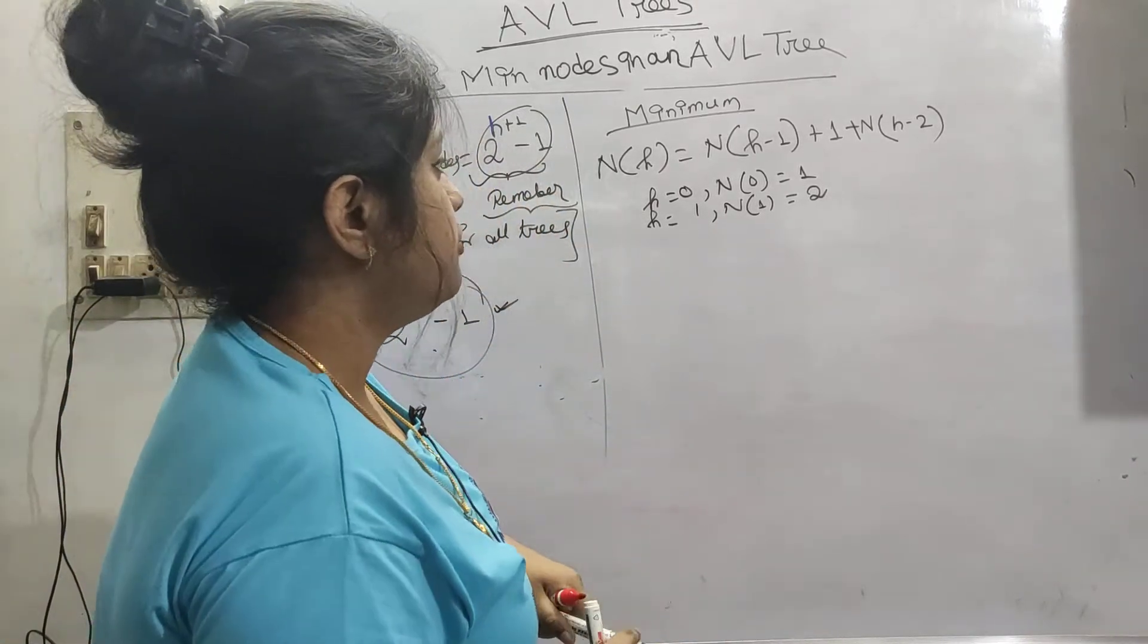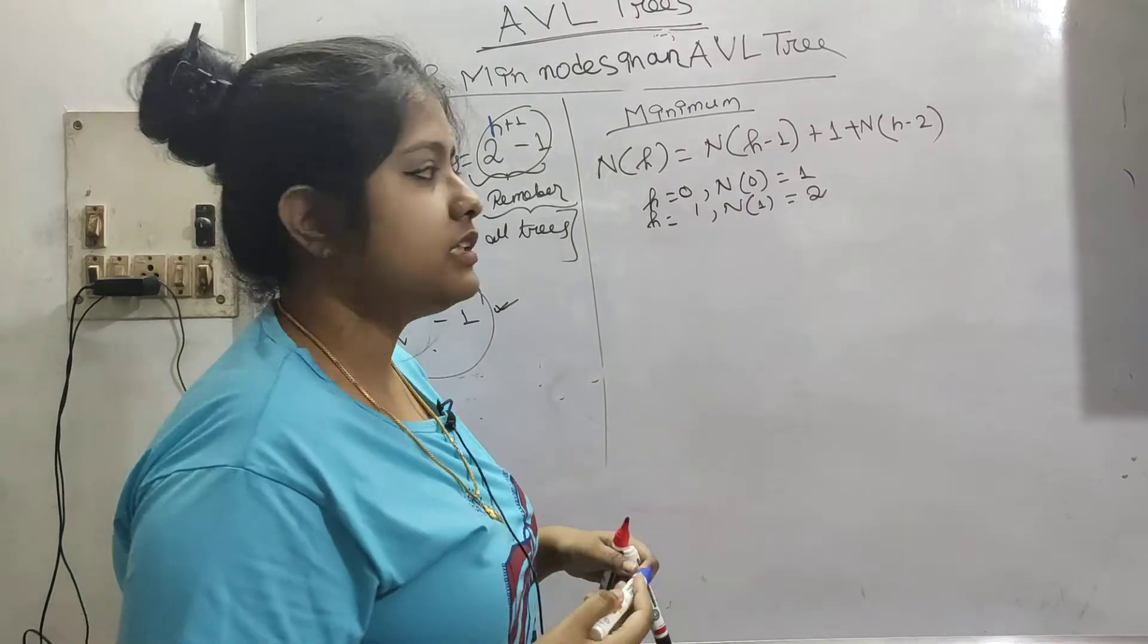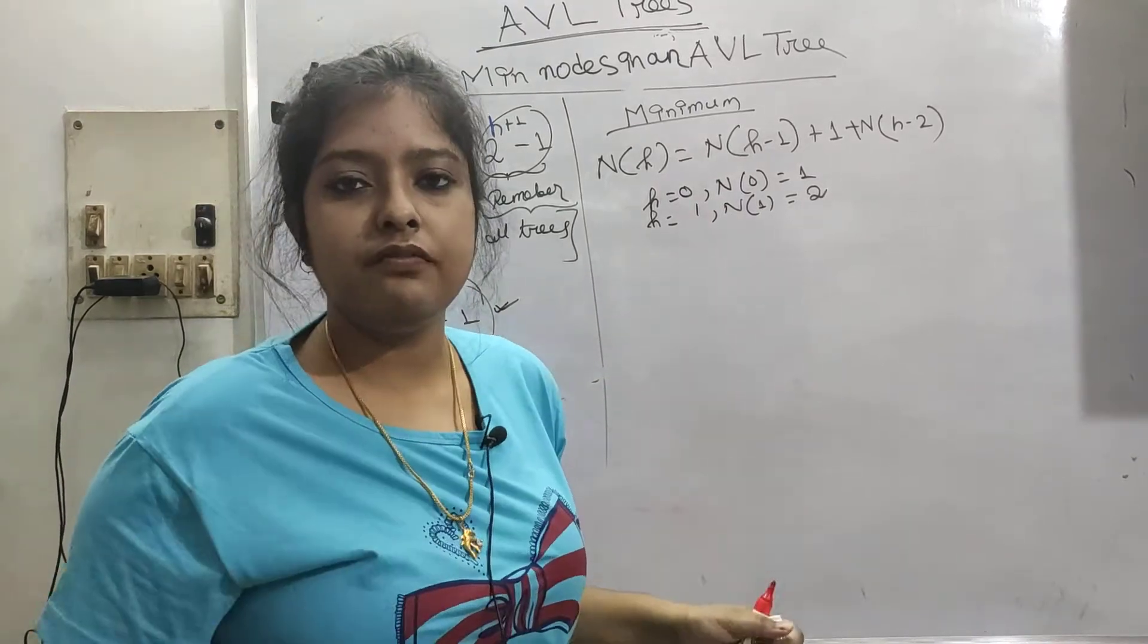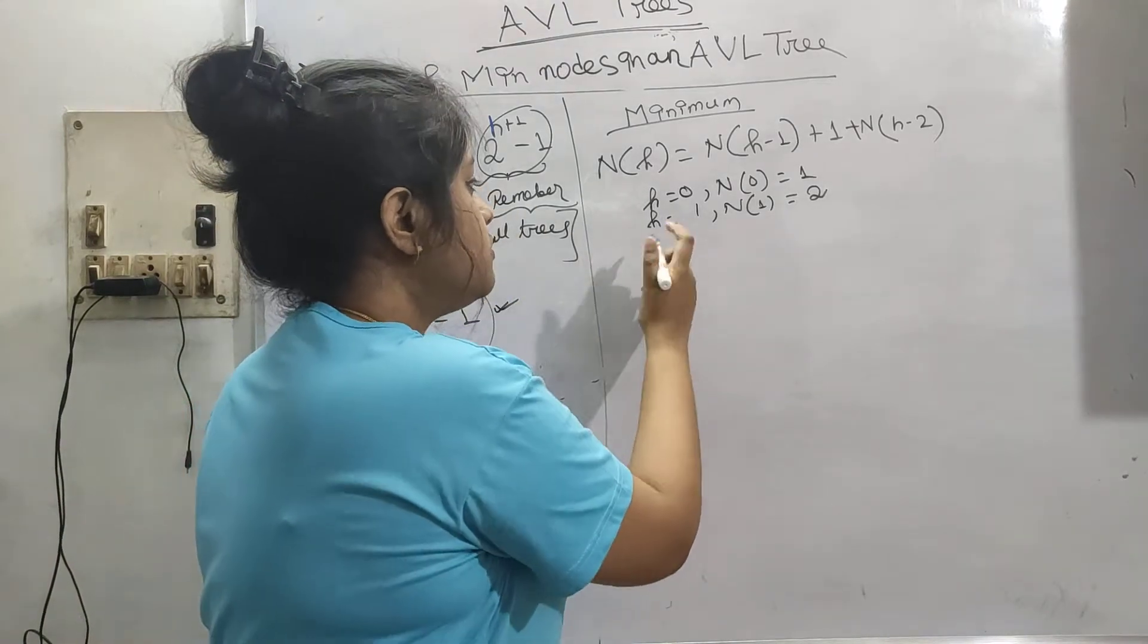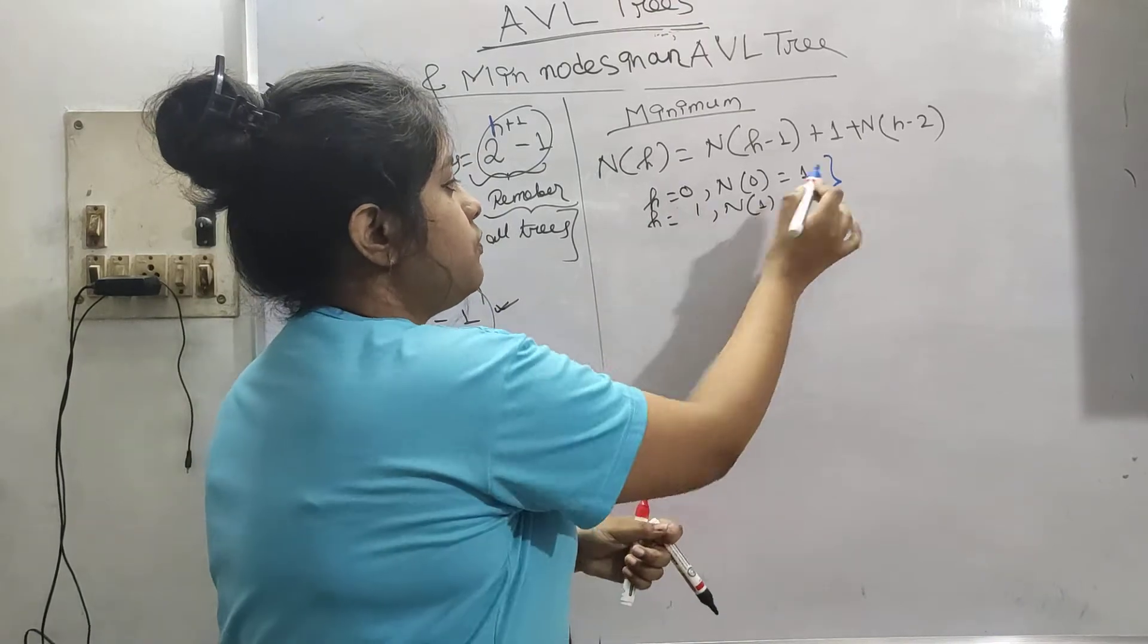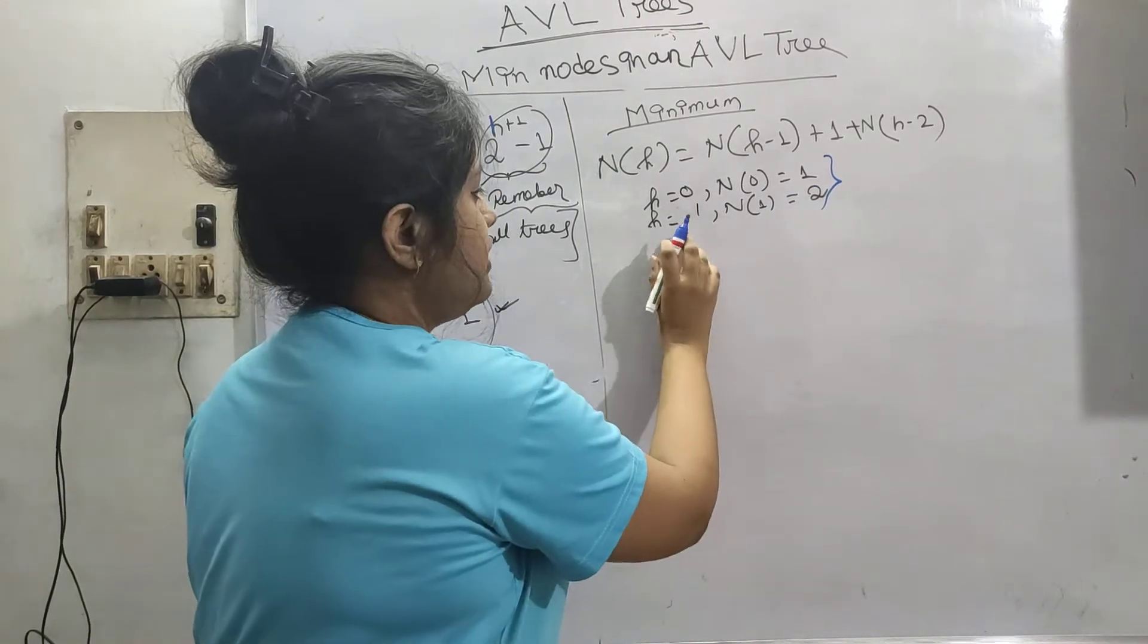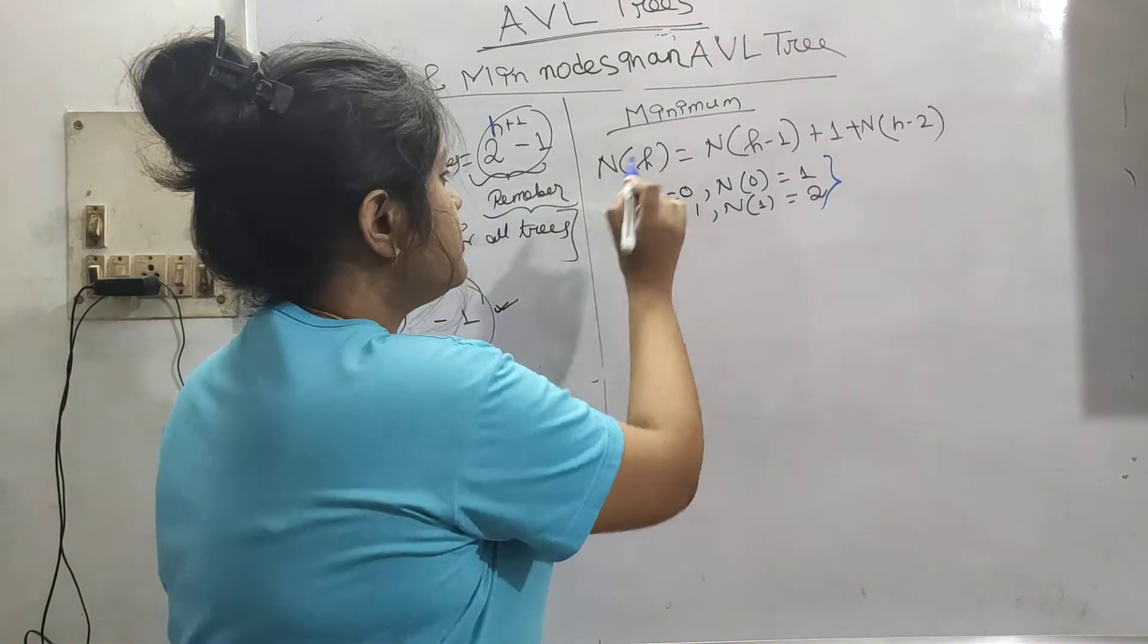Now minimum number of nodes in an AVL tree. This is actually a recursion formula, the recursion we have done in C. Our condition is when height is 0, number of nodes will be 1 minimum, and when height is 1, minimum number of nodes will be 2. This is our recursion.